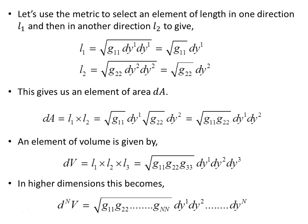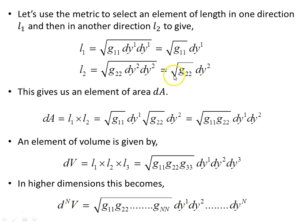Let's use the metric to select an element of length in one direction, L1, and then in another direction, L2. Going in the y1 direction only, an increment of length is ds = √(g_11) dy1. In the y2 direction, an element of length ds gives us √(g_22) dy2. This gives us an element of area dA = L1 × L2. An element of volume dV is just the increments in each of the three directions multiplied together. In higher dimensions — for instance, n dimensions — the volume element can be generalized similarly.